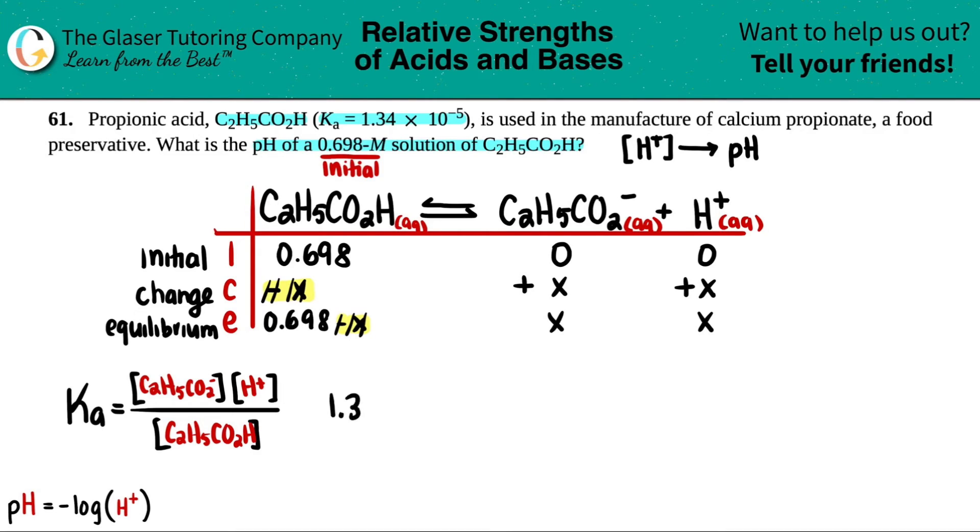So just for math purposes, we're probably going to get so close that you can get rid of these minus X's. However, we have to keep these X's that don't have minuses with them, because if we get rid of these, where's the variable? We got to have at least a variable. So let's plug it in: 1.34 times 10 to the negative fifth, that's the Ka that they gave me, equals X times X over the initial. So X, X, 0.698.